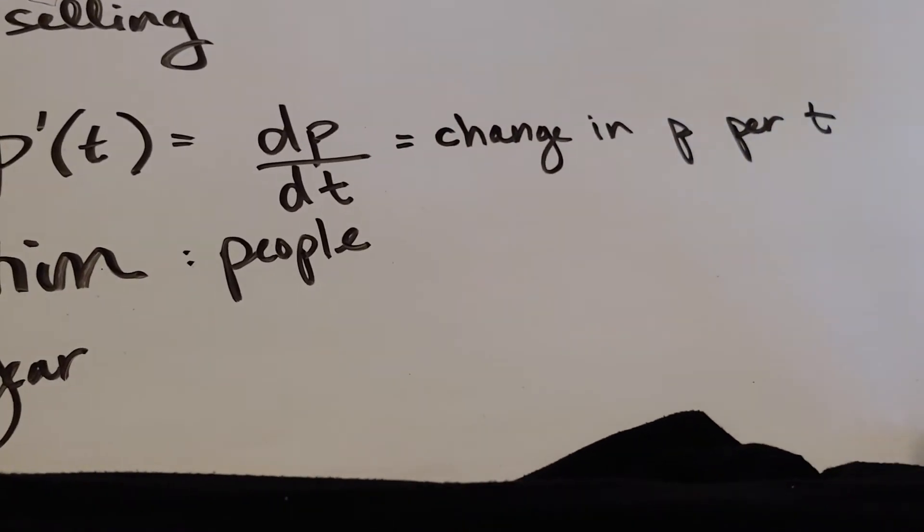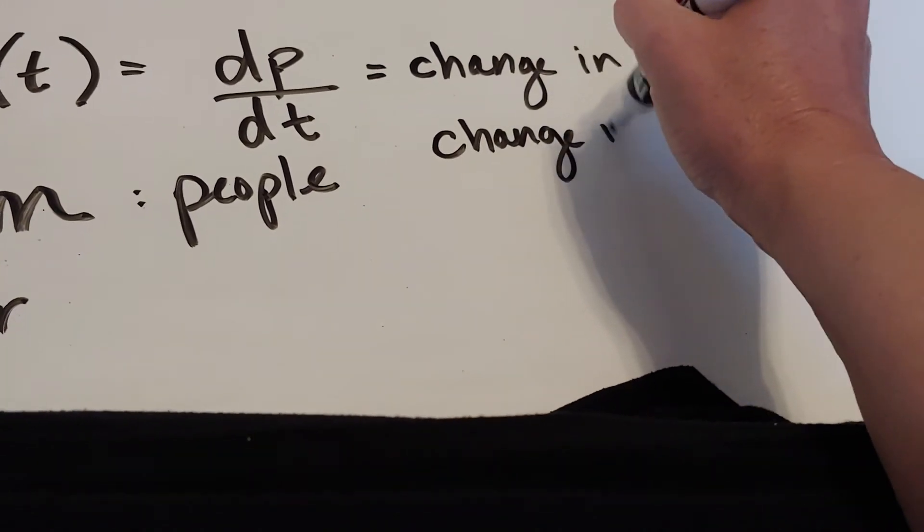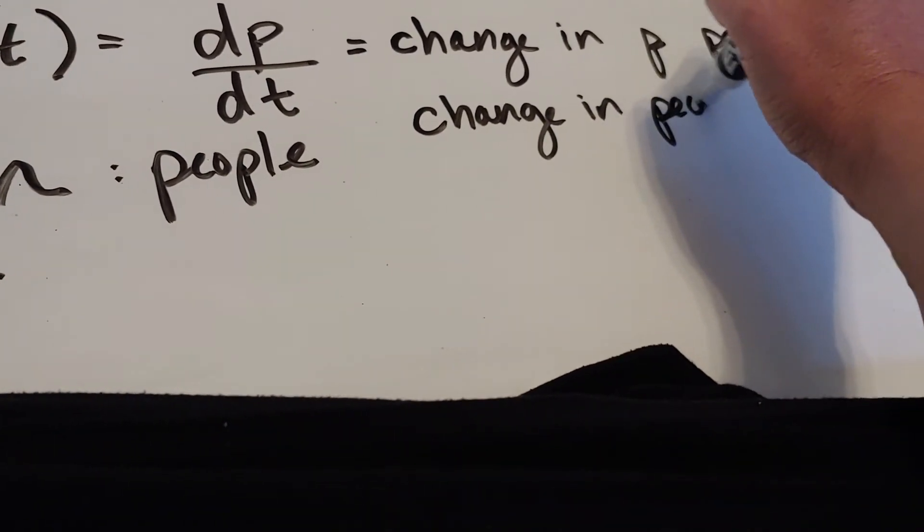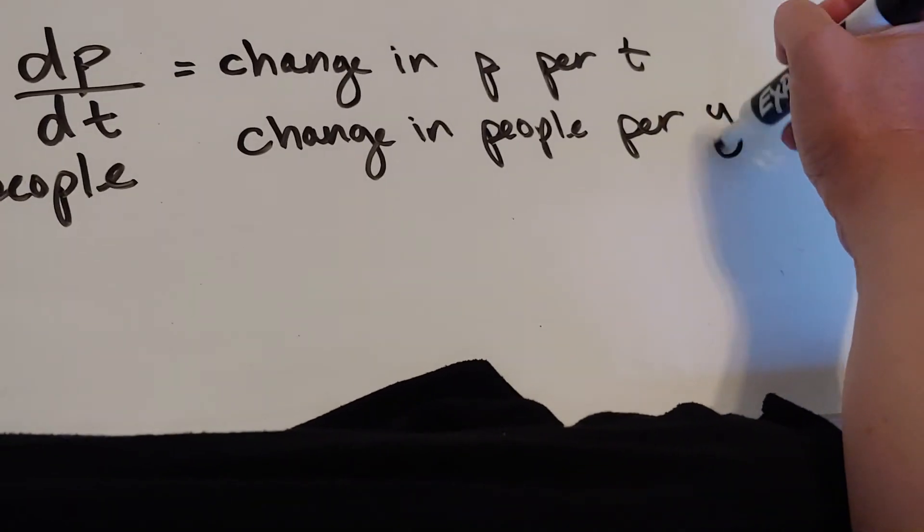Now, what does change in p per t mean? Change in population, or the number of people, per year.